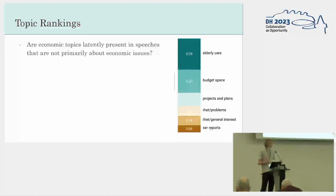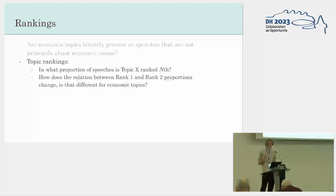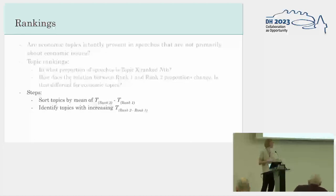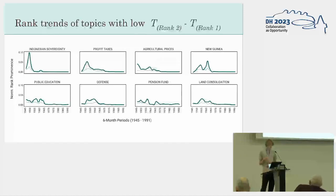So you can see that below the surface there are sometimes economic logics going on, and I try to map how this happened and whether it increases over time. I basically ask: in what proportion of speeches is a topic ranked first, second, third, or fourth, and how does the relation between rank one and rank two proportions change — and is that different for economic topics? I basically create two time series, one with the proportions for rank one and one for rank two, and then calculate the subtracted time series by subtracting rank one from rank two. Then I sort the topics by their mean rank two minus rank one, and identify topics with an increasing time series of this subtracted trend.